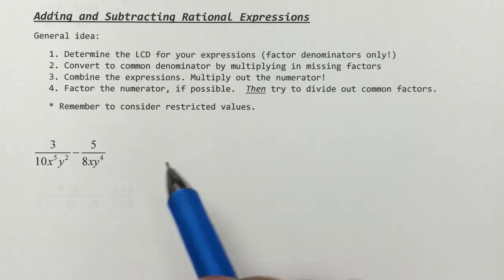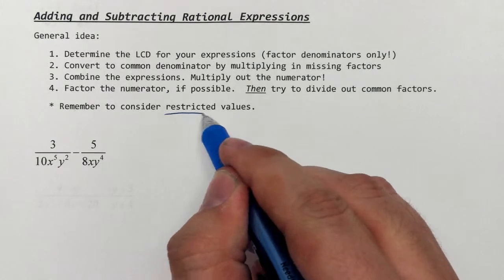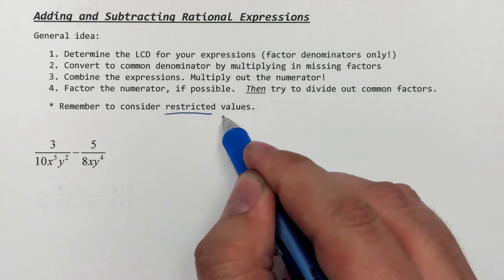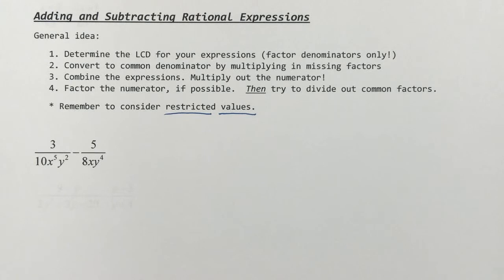The other thing you need to note: since we now know a bit more about this from when we first talked about least common denominator, you need to consider restricted values. Restricted values are not always necessary, but they are useful in a lot of contexts, so that is why we want to think about them. Let's take a look at a simple example.